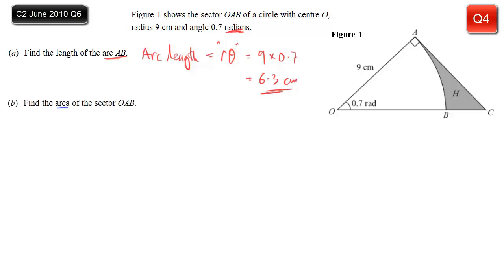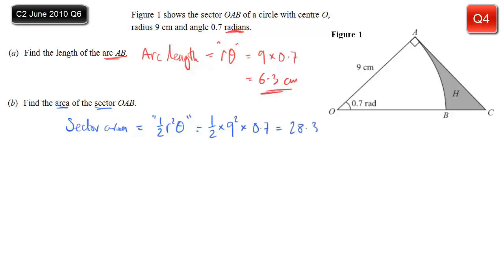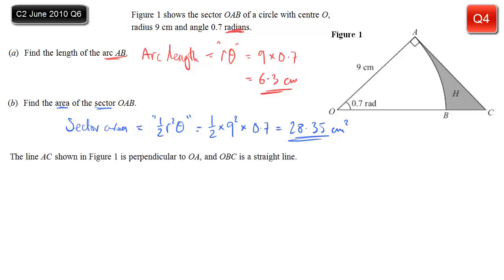Part B, we're asked for the area of the corresponding sector OAB. Again, there's a formula which should be very familiar: ½r²θ. So plug it in: ½ times the radius of 9 squared, multiplied by our angle of 0.7, and that comes to 28.35cm². That's the exact answer, not rounded, but you could round it to three significant figures: 28.4.